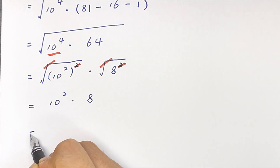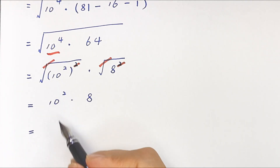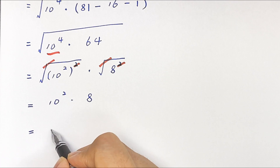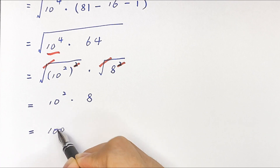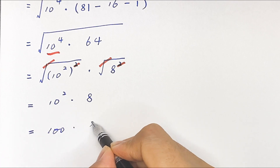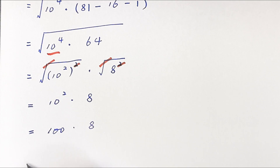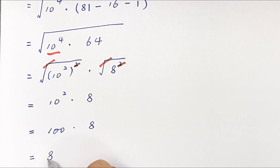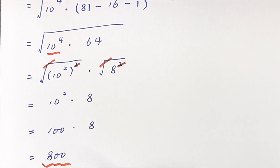10 squared equals 100, times 8, so the final answer is 800. Thank you for watching and see you in the next video, bye.